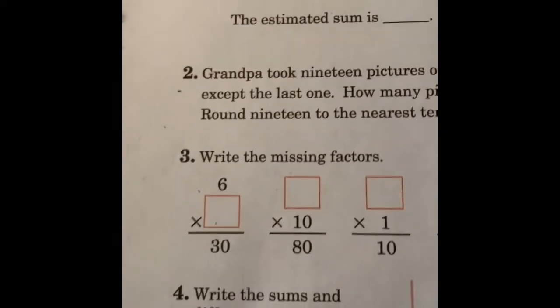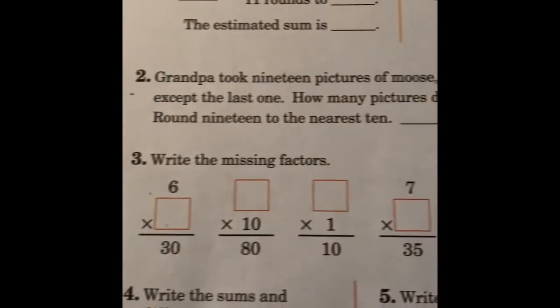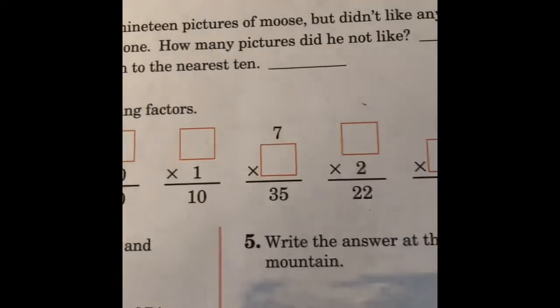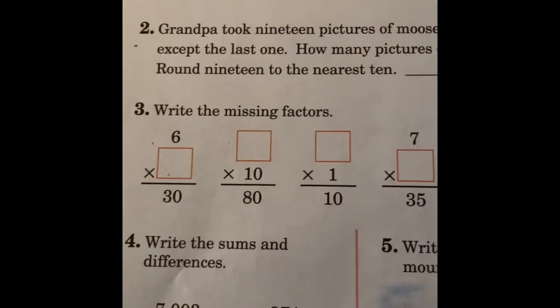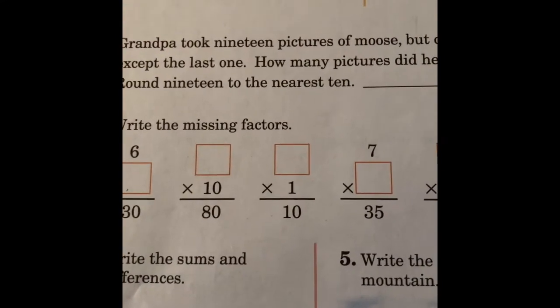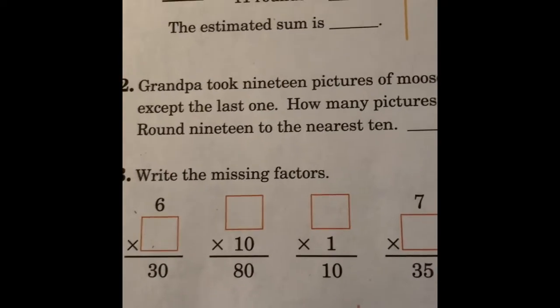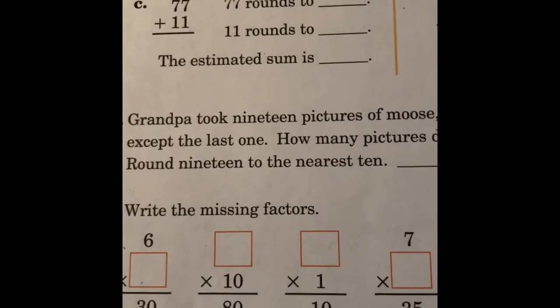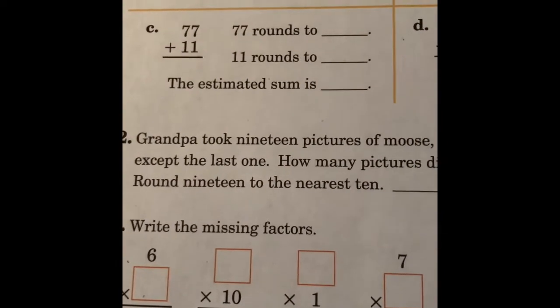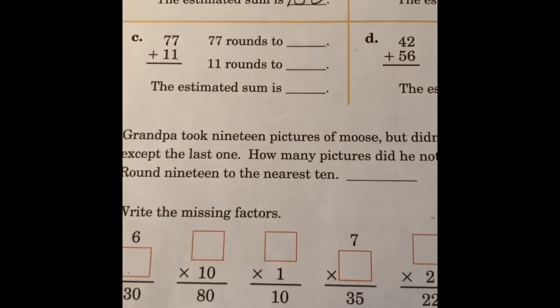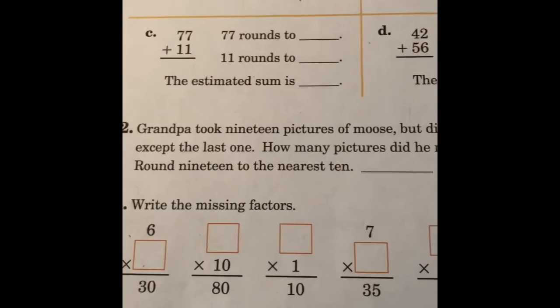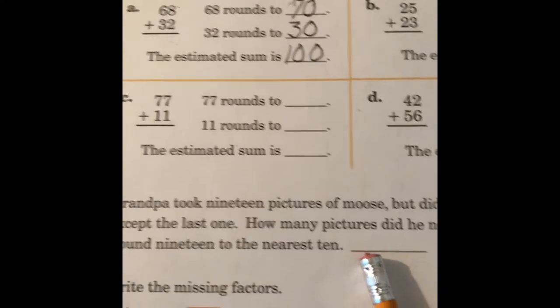Number 2. Grandpa took 19 pictures of moose, but didn't like any of them. Except the last one. How many pictures did he not like? Round 19 to the nearest 10s. So, how many pictures did he not like? He took 19. He only liked 1 out of the 19. So, 1 out of the 19 would be, how many did he not like? Out of the 19, he only liked 1. So, he did not like 18 pictures. Okay. Now, round 19 to the nearest 10s. So, we went around 19 to the nearest 10s. And that would go there. Okay.